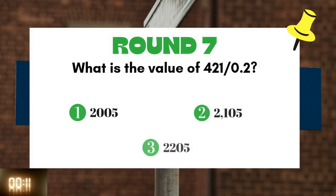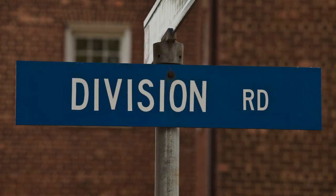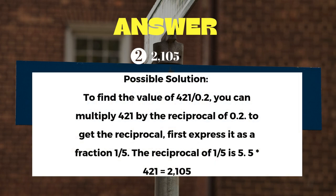Round 7: What is the value of 421 divided by 0.2? The answer is 2105.